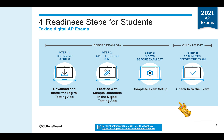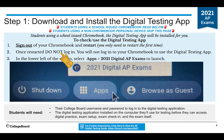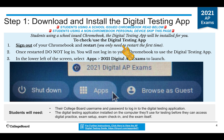So let's move on to downloading and installing the digital testing app. Starting April 8th, you will be able to download and install the testing application. For those of you using a school-issued Chromebook, the school will have pushed the app out to your devices. Starting with your school-issued Chromebook, you are going to sign out and restart the device. You only need to restart the Chromebook the first time — this refreshes it and pushes out any application that was sent to your Chromebook.